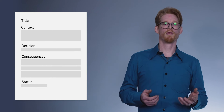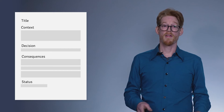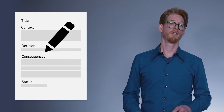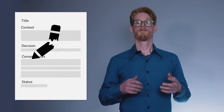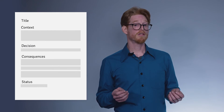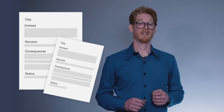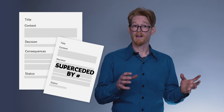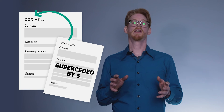Each ADR also has a status. Most people use: proposed, accepted, deprecated, and superseded, or something like that. One of the rules Michael Nygaard stated was that after you and your team agree on a decision, that ADR is immutable — you can't change it anymore. If you come back to your decision, you write a new ADR with the current context and the new consequences, and the old one now gets the status 'superseded by' and refers to the new one. Because of the numbers in the title, you can see when a decision was superseded.